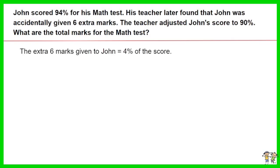The extra 6 marks given to John is equal to 4% of the score. As such, each 1% of score is equal to 6 divided by 4, which is 1.5 marks.